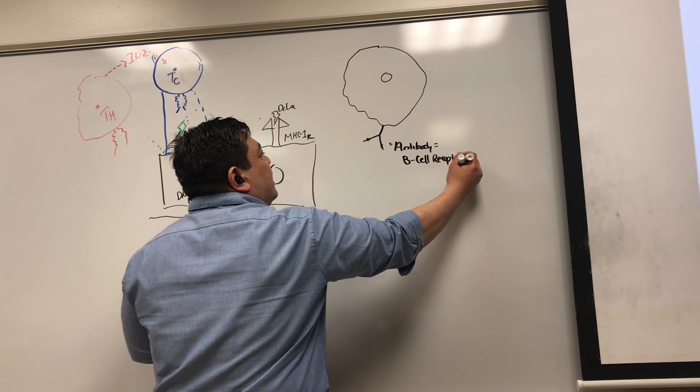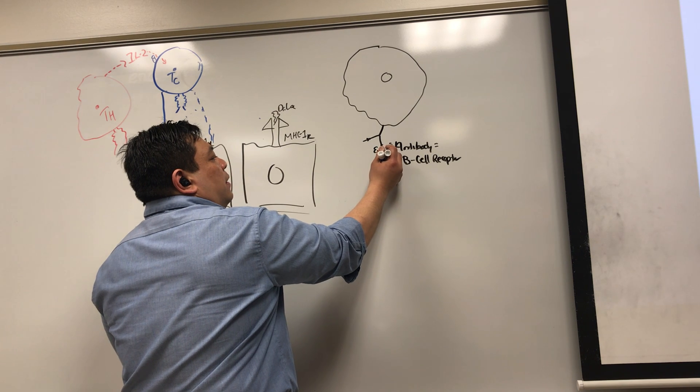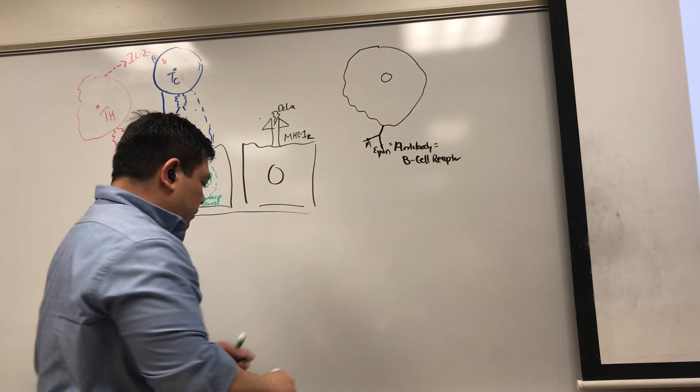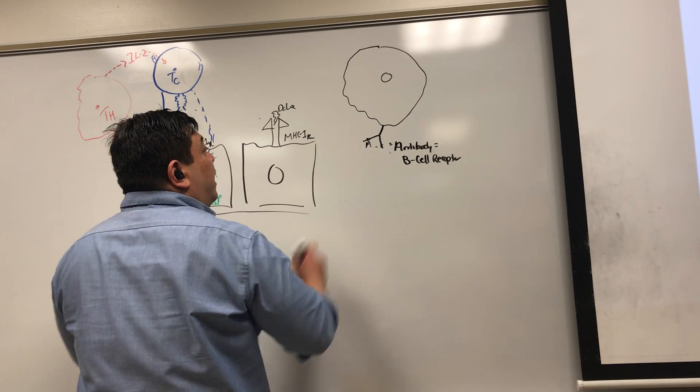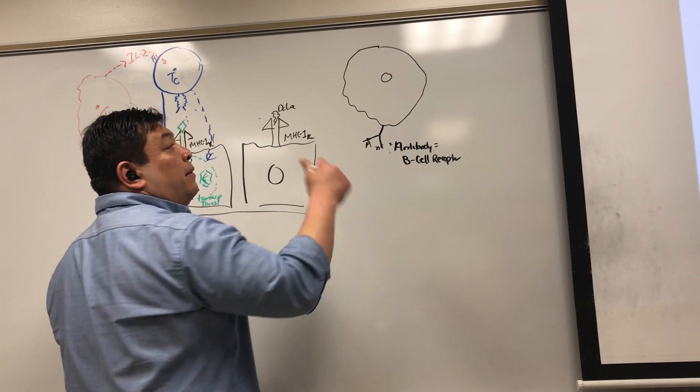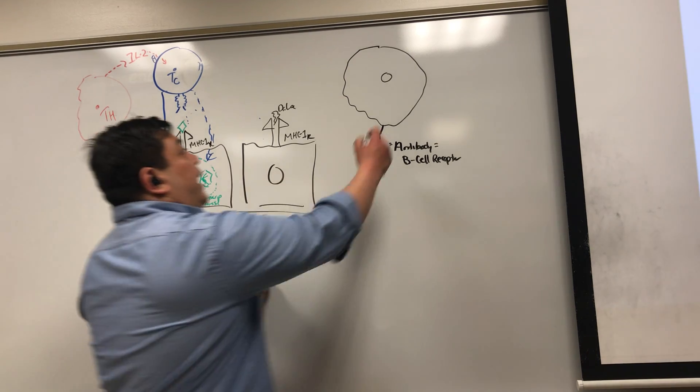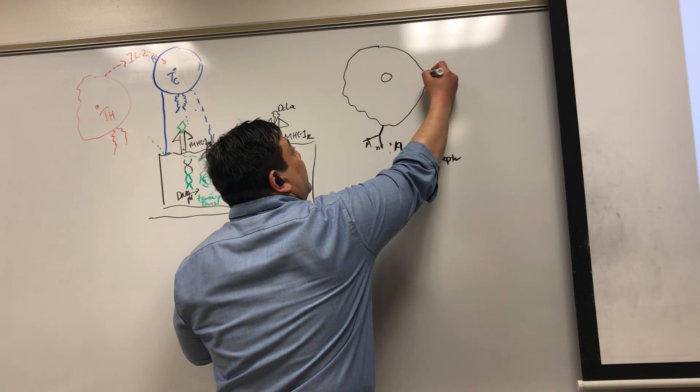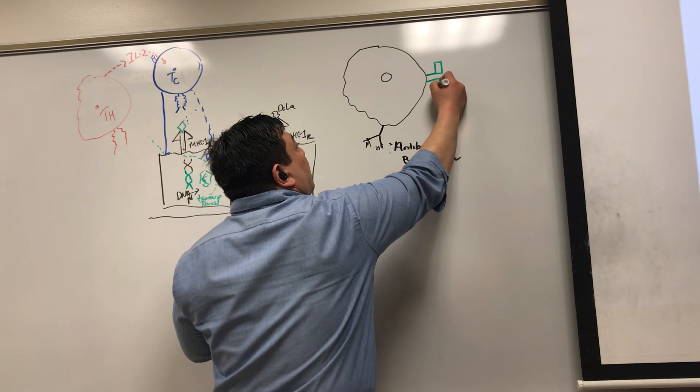And it recognizes, let's say, epitope A from varicella. What happens? Because it's a B-cell receptor, or because it's an antigen-presenting cell, it also has, I think I made it in green, so I'm going to make this in green. It also has MHC2 on there.